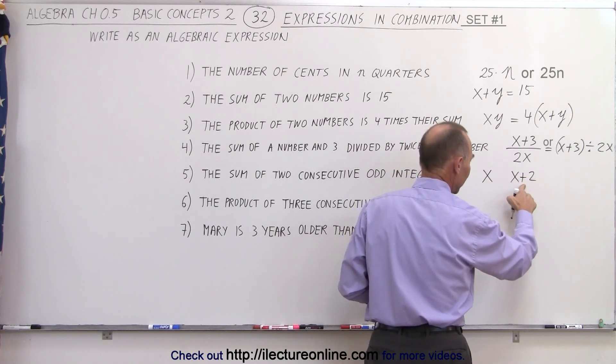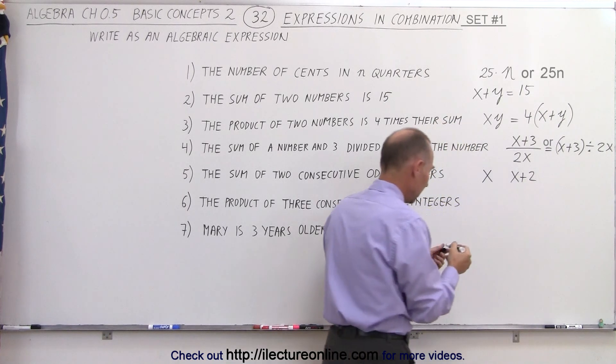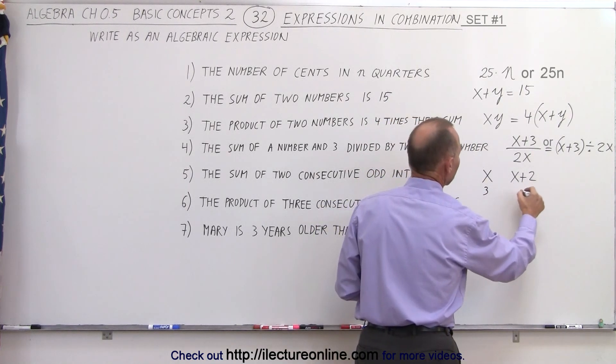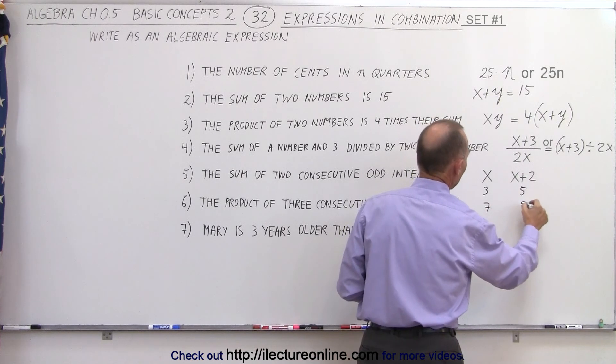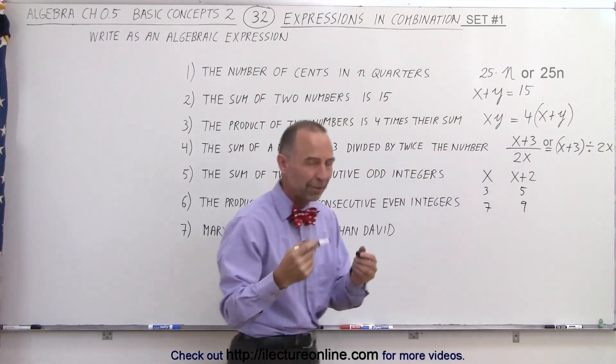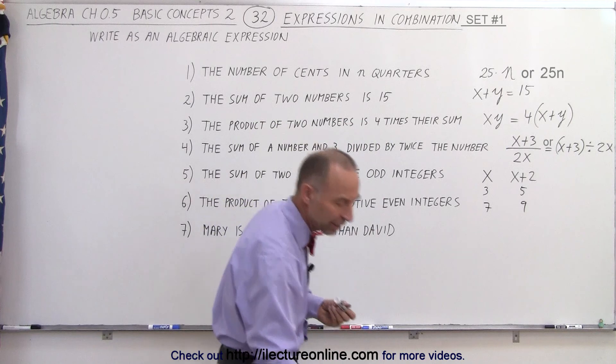And that's the next consecutive odd integer would be two more. If x was equal to three, then the next one would be five. If x was equal to seven, the next one would be nine, and so forth. So you can see that means consecutive odd integers.